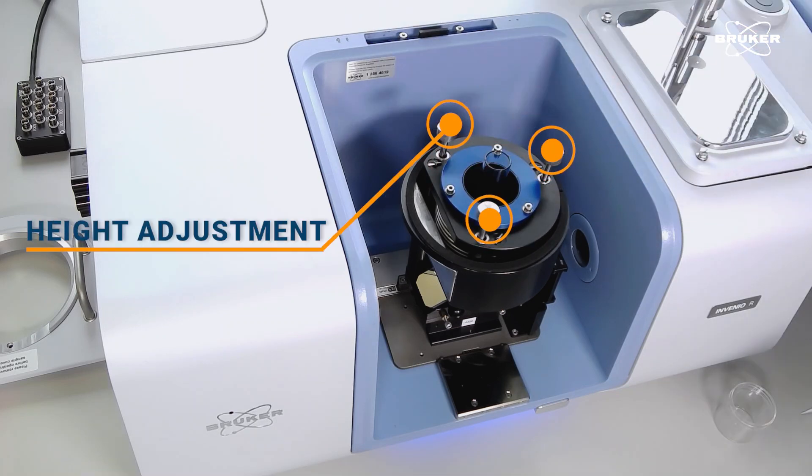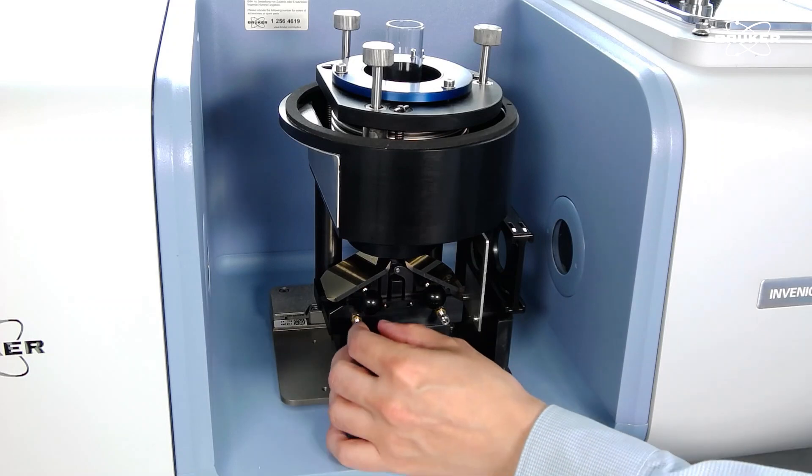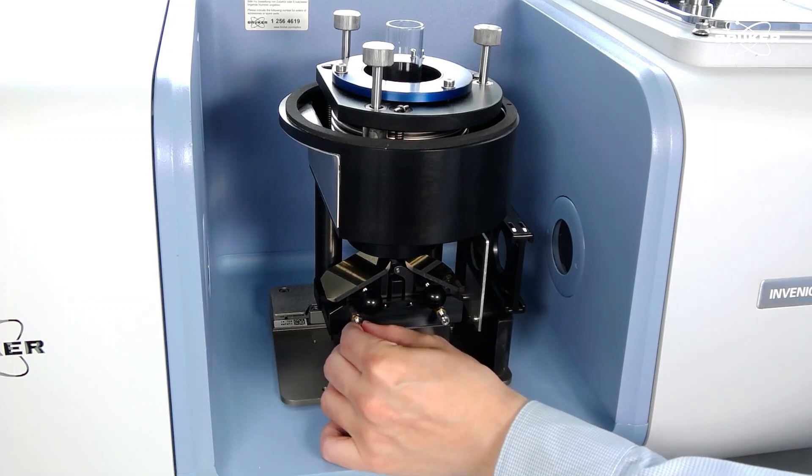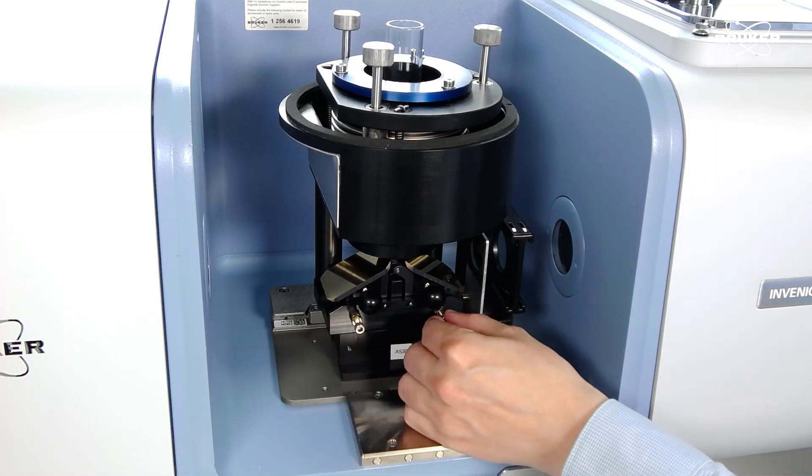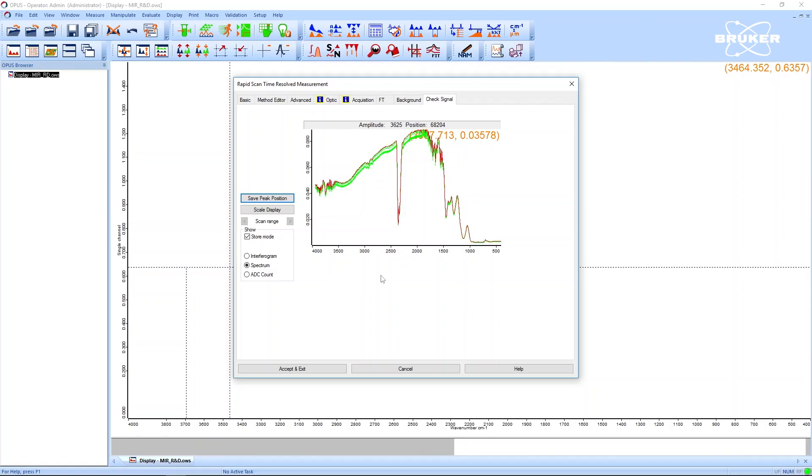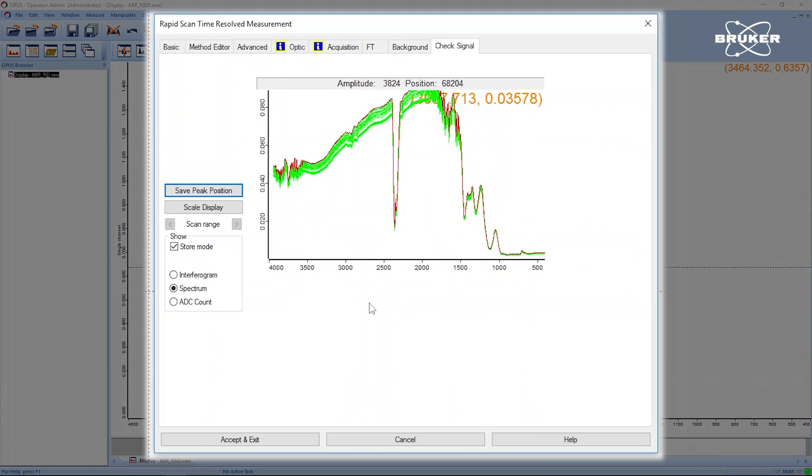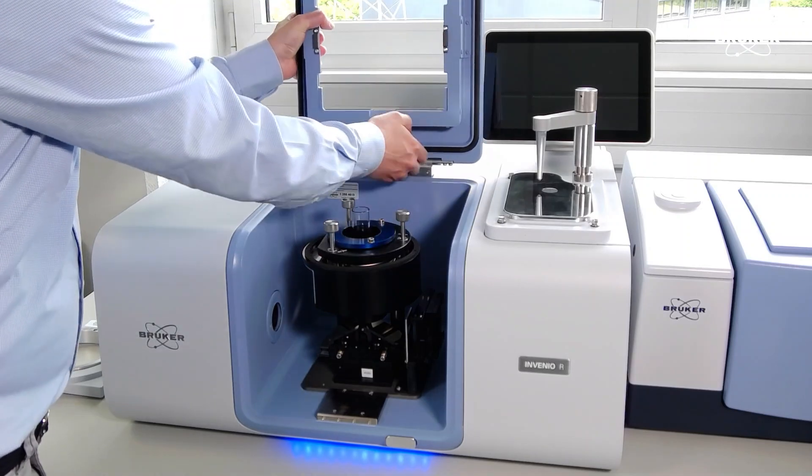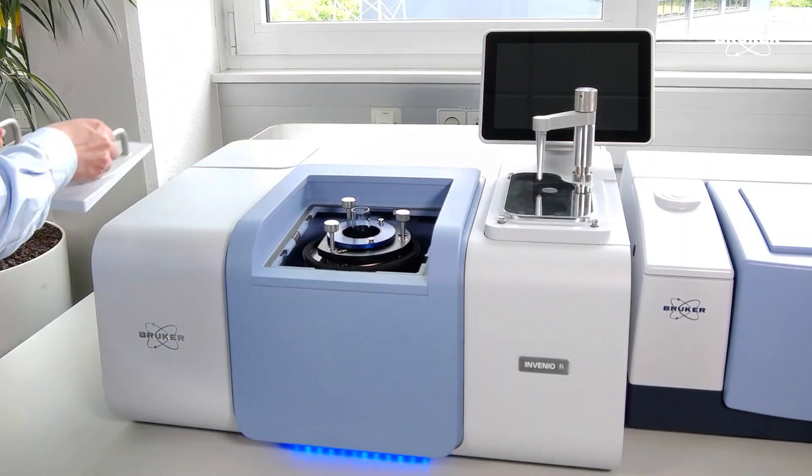Before starting the experiment, it's best to align the mirrors. You can achieve this by following the signal intensity during alignment in our Opus software until it is maximized. With the Invenio setup completed, secure everything with the sample compartment cover.